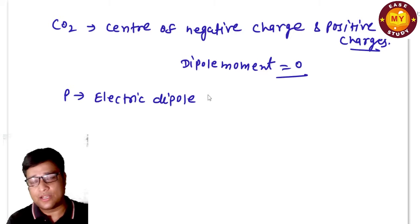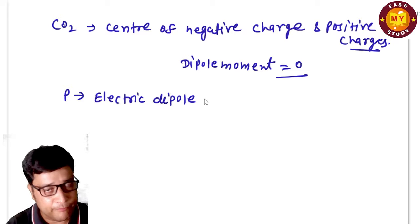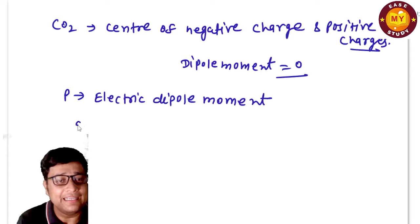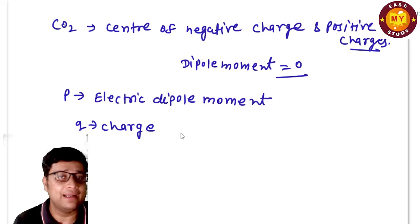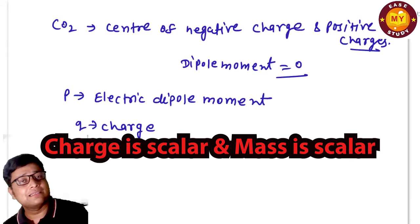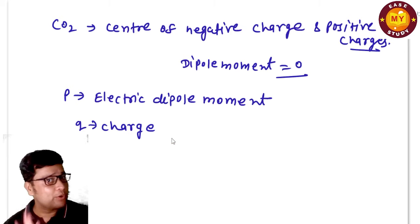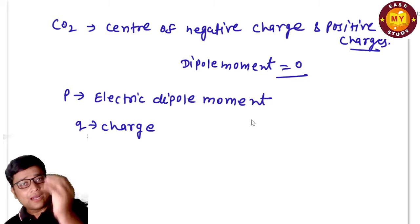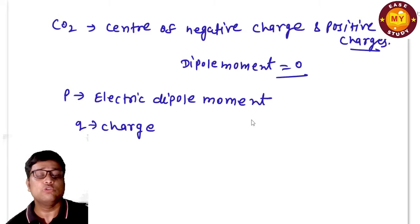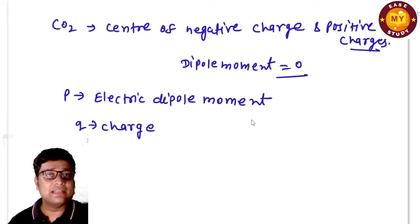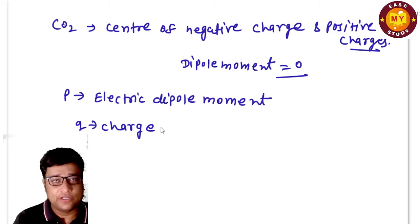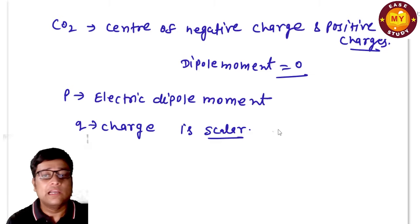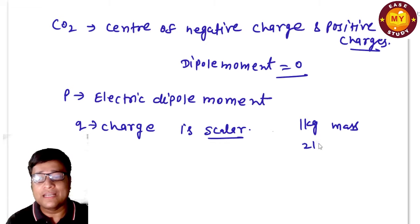The electric dipole moment is denoted by p and equals q × d, where q is the magnitude of the charge. In electrostatics, the charges are not moving. Now, charge is a scalar quantity — just like mass — charge does not have a direction, and you simply add it algebraically.